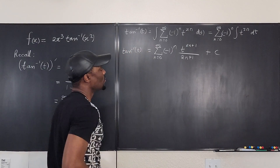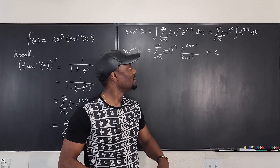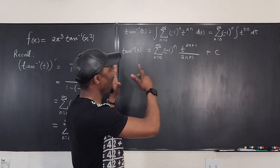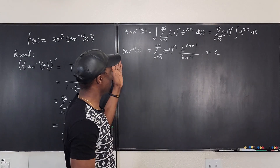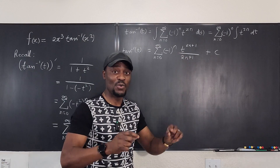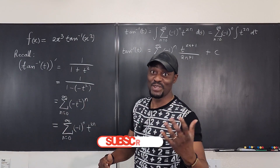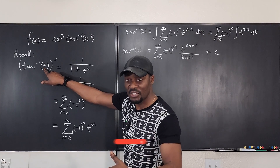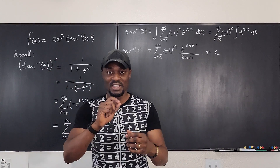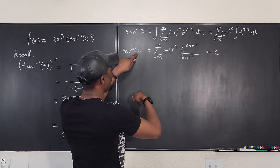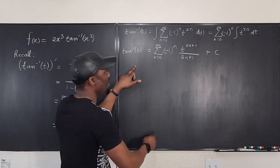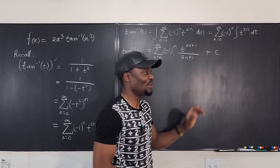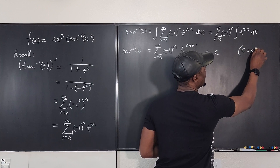What will C be? C is a constant, so let's plug in a convenient value of t. We use t=0, which is the center of convergence. Arctan(0) = 0, and plugging t=0 into the series makes every term zero, so we get 0 = 0 + C, which means C = 0. We don't need to carry C around anymore.